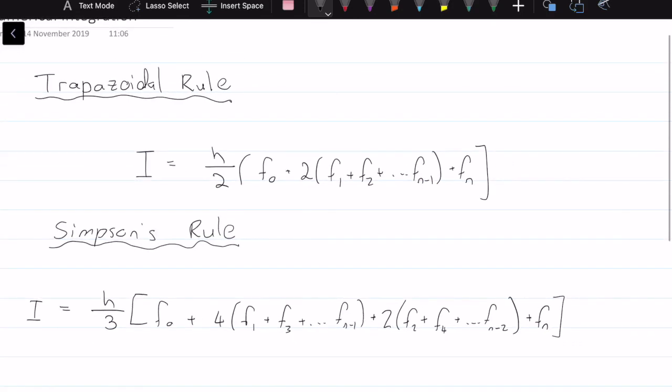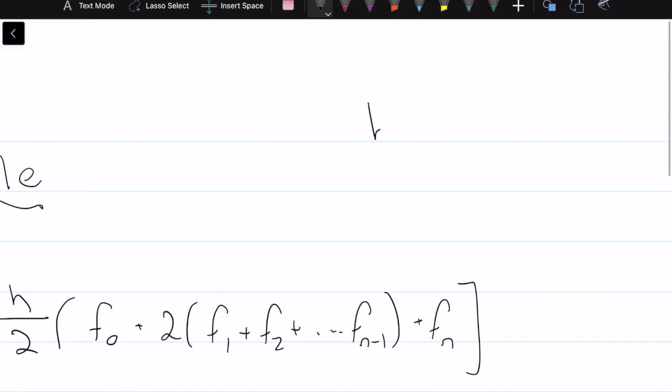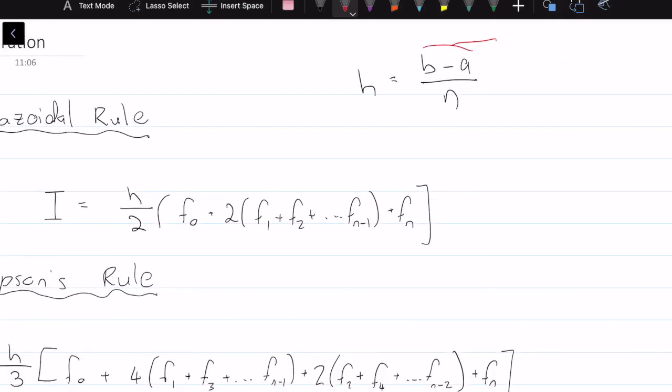What do all these things mean? In both cases, we can define h as being b minus a over n, where we have b minus a is equal to our limits of integration, and n is equal to our number of subintervals. Both of these will usually be given in the question.